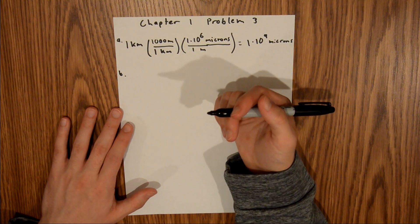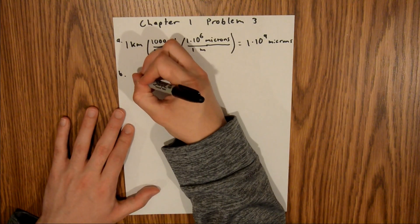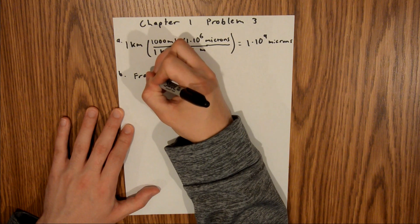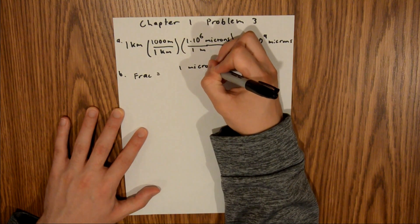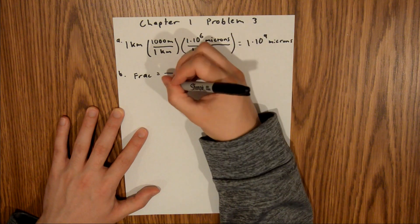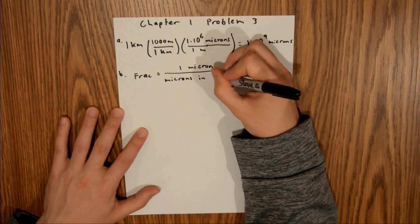And that will give us the fraction of a centimeter that 1 micron takes up. So to put that on paper, the fraction we are looking for is equal to 1 micron over microns in 1 centimeter.